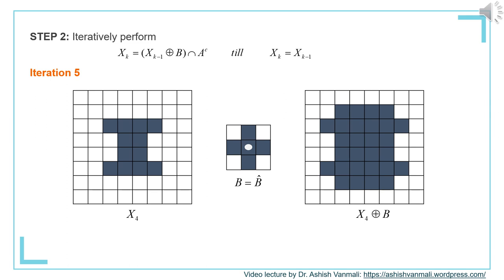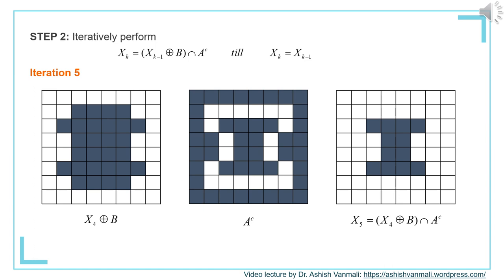For iteration 5, we dilate X_4 with B, and whatever the result we take the intersection with A complement, which gives us X_5. X_4 is shown in the first figure, B (same as B_cap) in the second figure, and the result of dilation in the third figure. We then find the intersection with A complement; the result is shown in the third figure and that is our X_5. Comparing X_5 with X_4, we find that both are the same, hence we terminate the iterations.